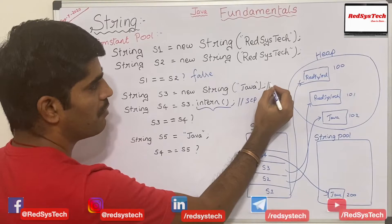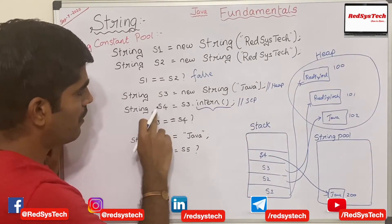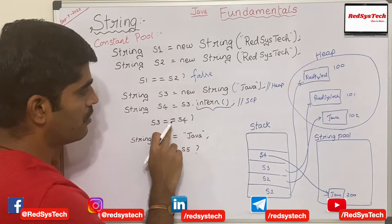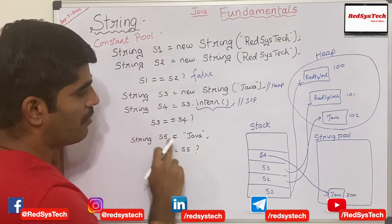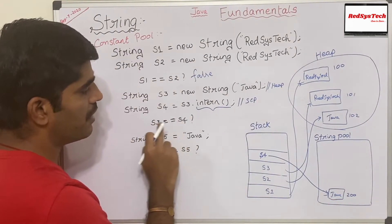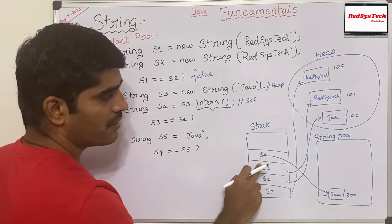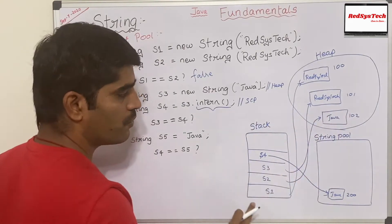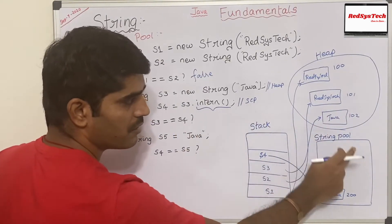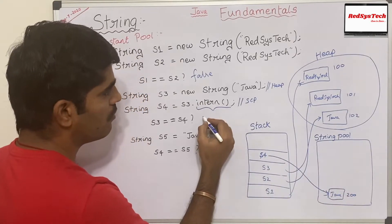So s3 is coming from heap memory and s4 is coming from the String Pool. When I say s3 == s4, we are comparing their address locations: s3 is at 102 (heap) and s4 is at 200 (String Pool). So this returns false.